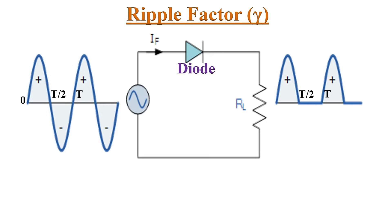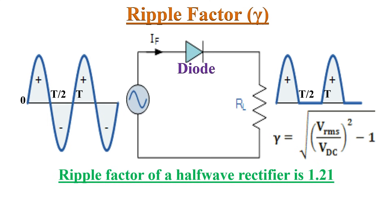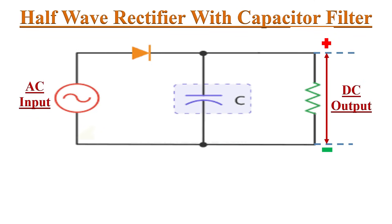The next parameter is ripple factor. Ripple is the unwanted AC component remaining when converting AC voltage into DC voltage. Ripple factor is the ratio of the RMS value of the AC input voltage to the output DC voltage of the rectifier. It can be quantified using the formula: γ = √[(Vrms / Vdc)² − 1]. The ripple factor of the half-wave rectifier is equal to 1.21.